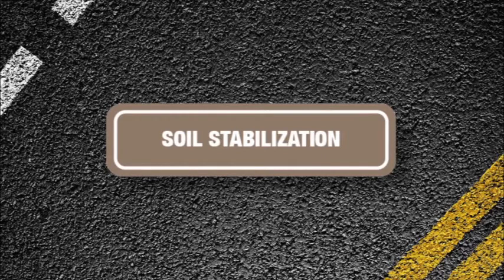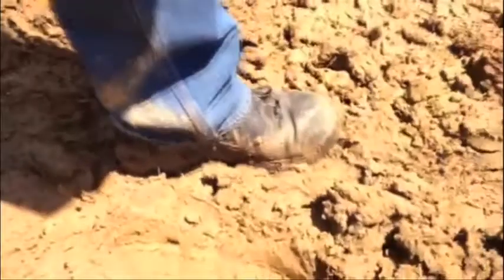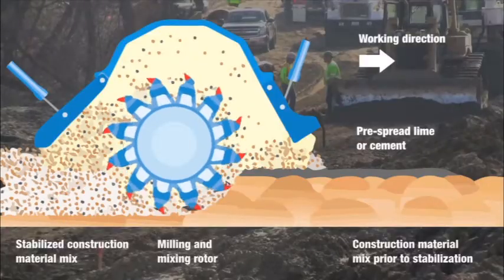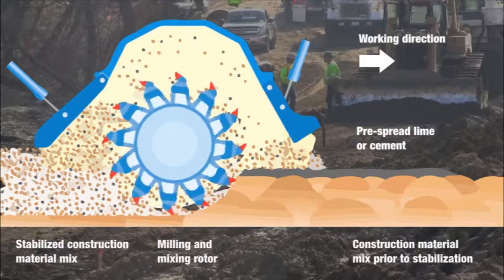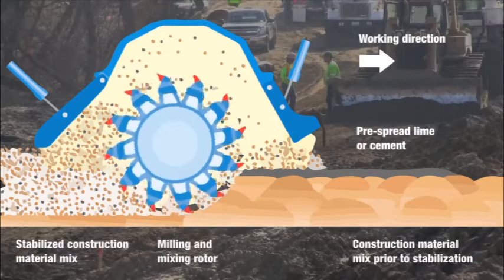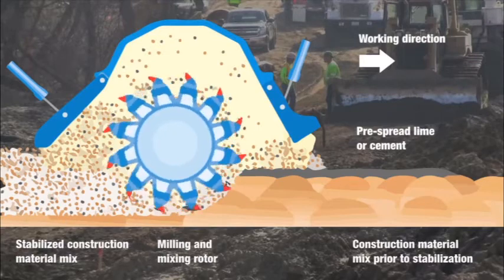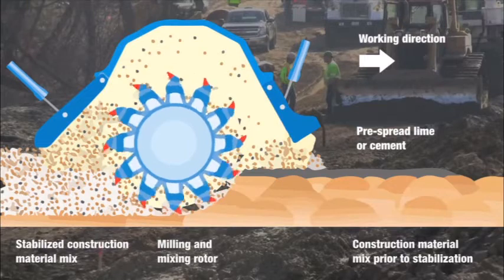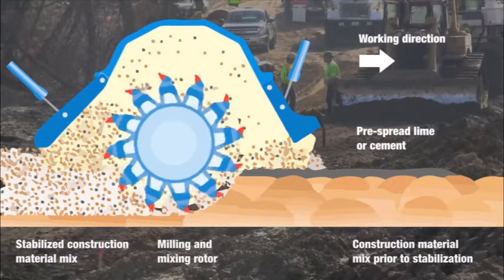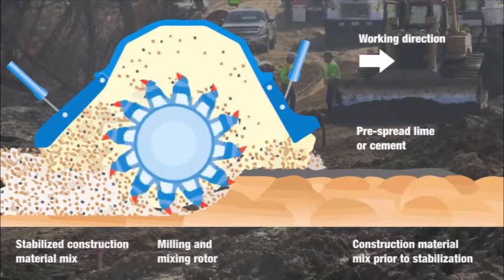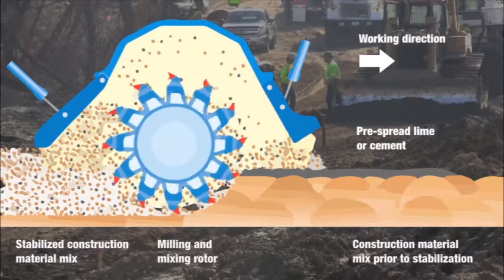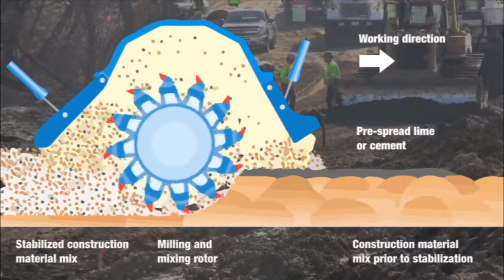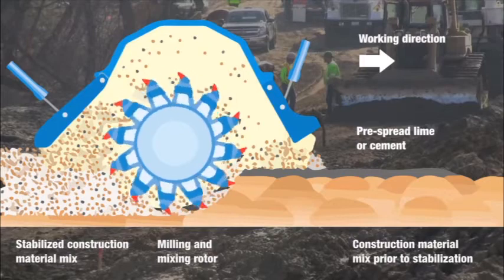Soil Stabilization. Soil stabilization is the permanent physical and chemical alteration of soils to enhance their physical properties. Soil stabilization can increase the shear strength of a soil and or control the shrink-swell properties of a soil, thus improving the load-bearing capacity of a subgrade to support pavements and foundations.